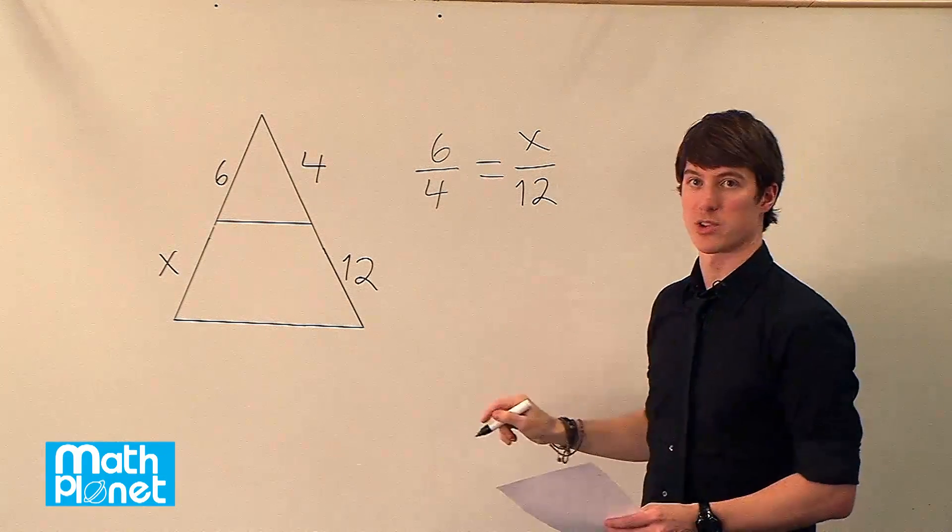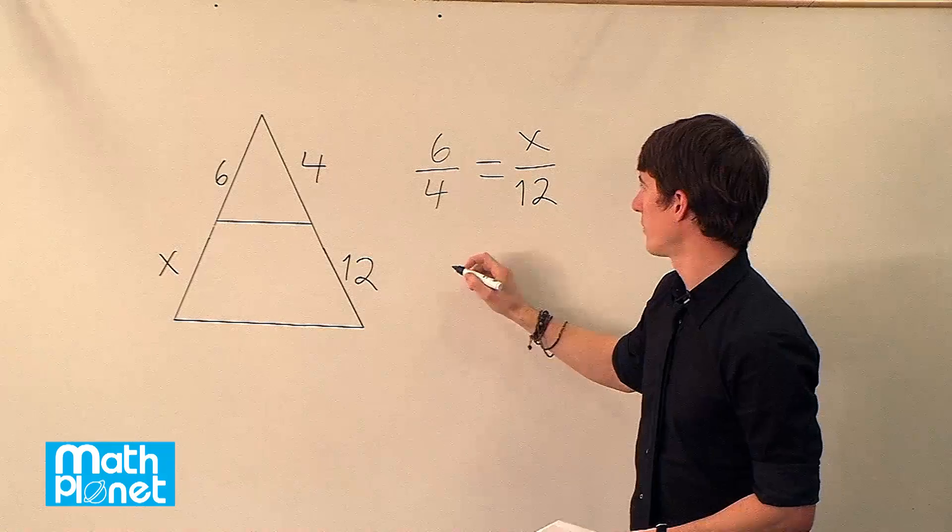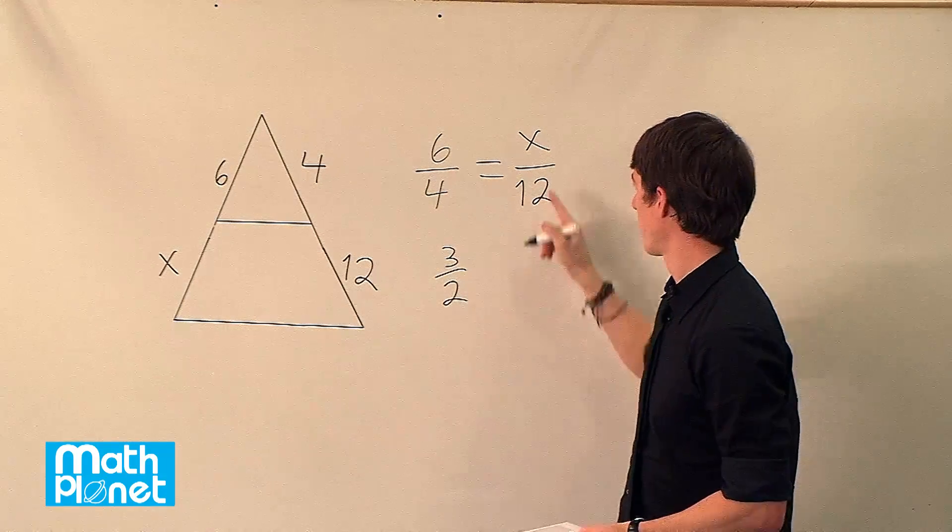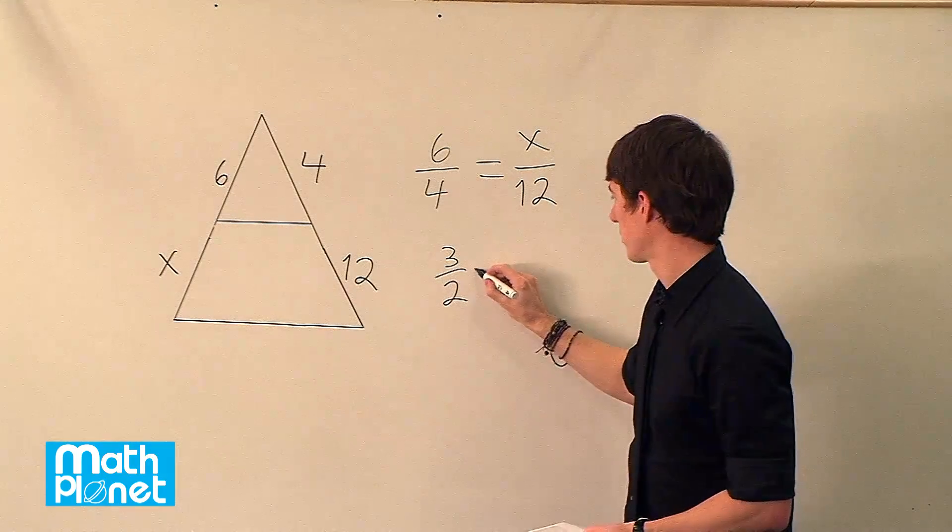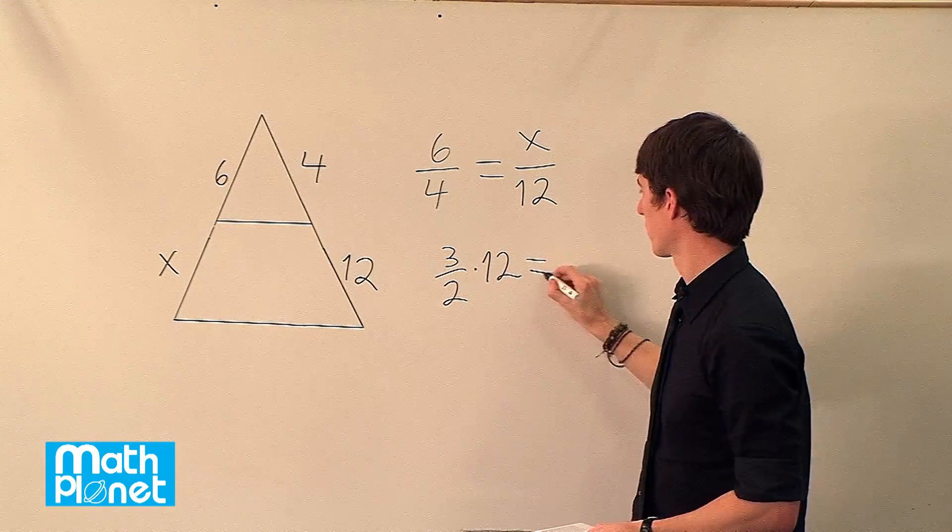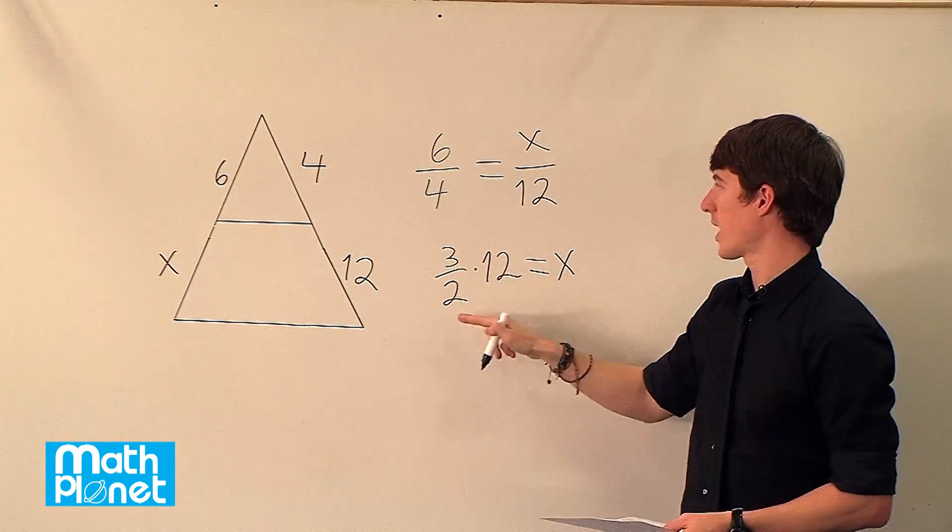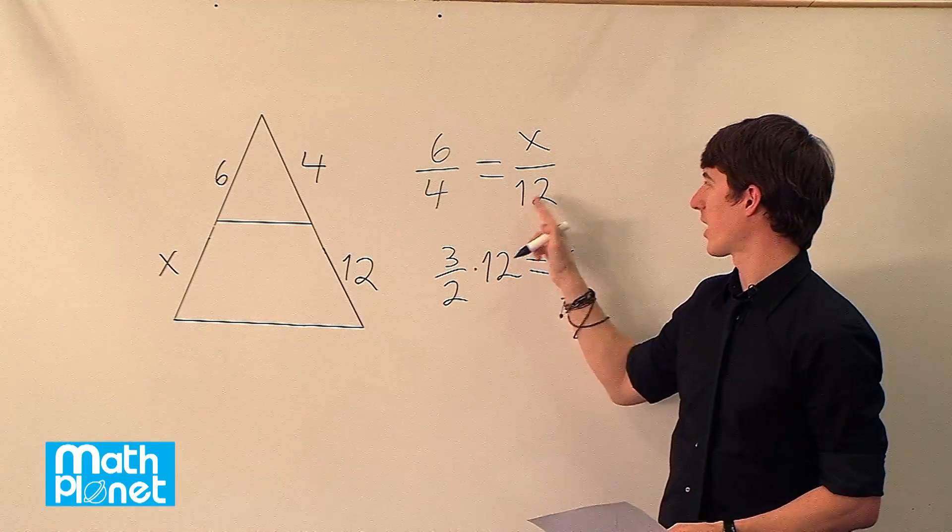So why don't we start by just simplifying this side here on the left. 6 divided by 4 is 3 halves, and then we can multiply both sides by 12, so times 12 equals x. So I've done two steps at once here. I've simplified 6 fourths to 3 halves, and I've multiplied both sides by 12.